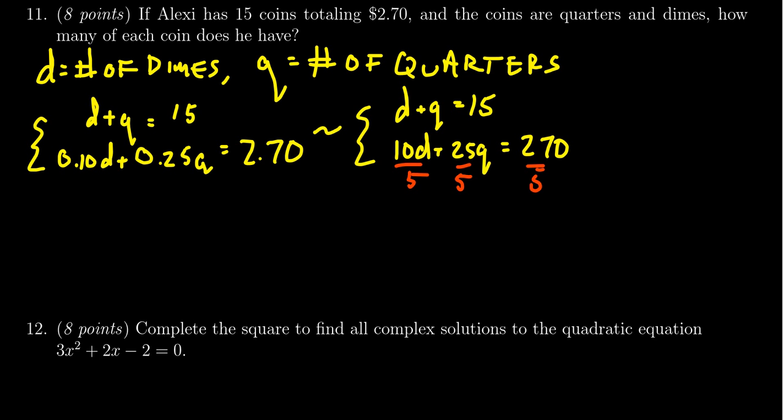In which case, I also want to solve this equation, this system of equations, I should say. I could use elimination, I could use substitution, I could use an augmented matrix. For the sake of example, I'm going to do this one by substitution. We're going to solve for d in the first equation. So when we rewrite our system one more time, we're then going to get that d is equal to 15 minus q. And then the second equation, when we divide everything by 5, we get 2d plus 5q.